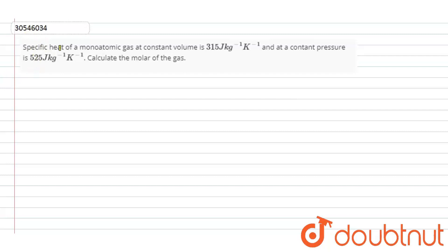So, in this question, the specific heat of monoatomic gas at constant volume is 315 joules per kilogram per kelvin. At constant pressure is 525 joules per kilogram per kelvin. Now, we have to calculate the molar mass of the gas.